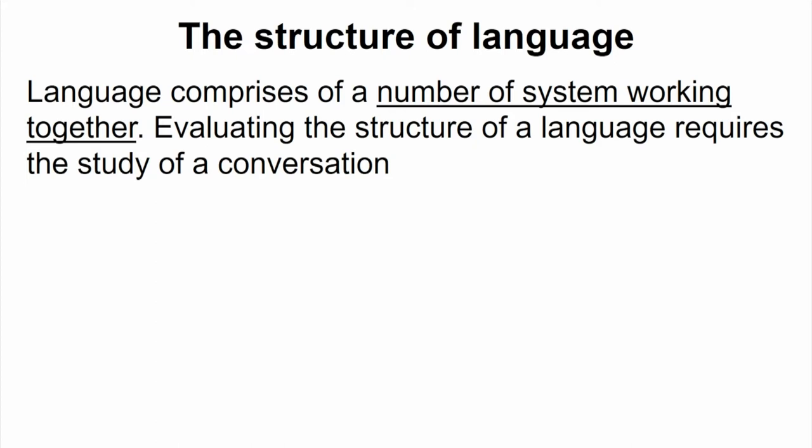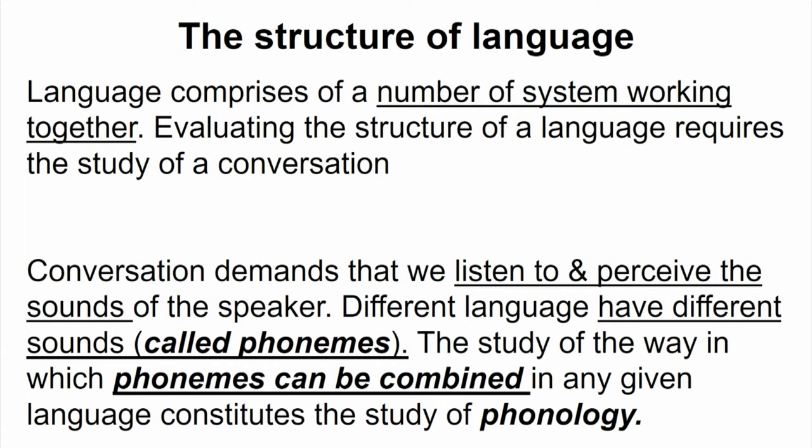What is the structure of a language? Languages have a number of systems which work together, and evaluating a language requires the study of conversations — basically the exchange of ideas between two people. Conversations revolve around listening to and perceiving the sounds of the speaker, but it is not just listening — you should also be able to understand what the speaker is saying. This is the difference between listening and understanding. Different languages have different sounds called phonemes. A phoneme is basically a speech sound; for example, 'ba,' 'da,' and 'sa' are called phonemes.